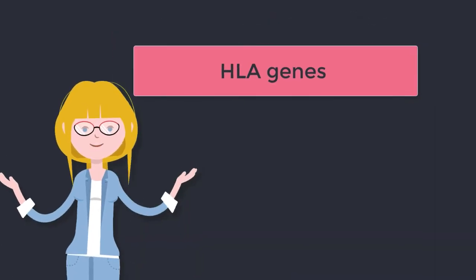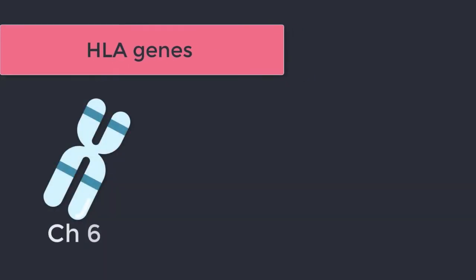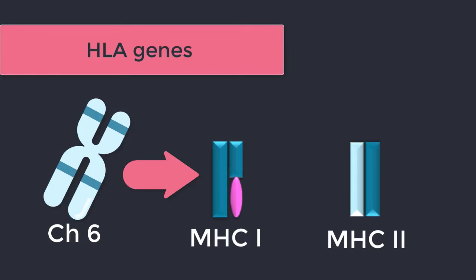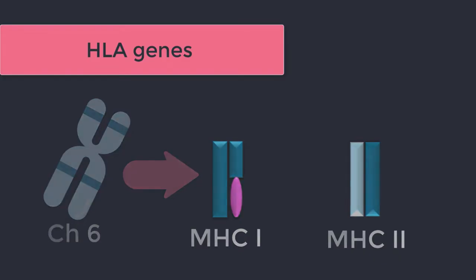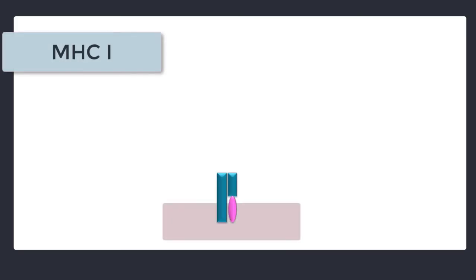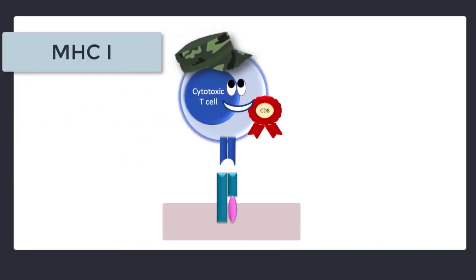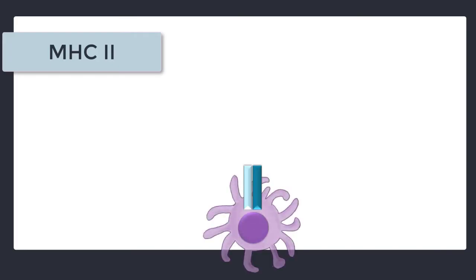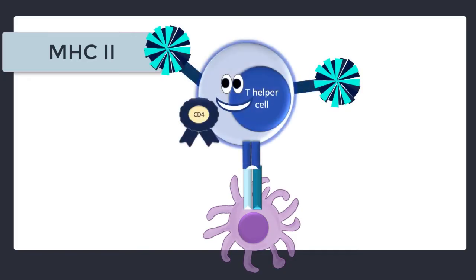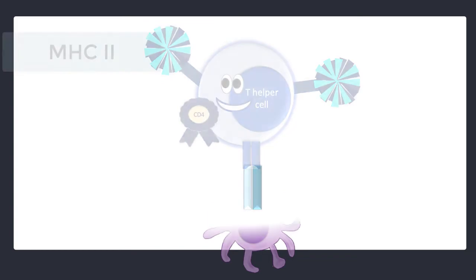The HLA genes are located on chromosome 6 and code for our MHC1 and MHC2 molecules. MHC1 is present on the vast majority of cells in our body and can present antigens to CD8 or cytotoxic T cells. MHC2 molecules on the other hand are located mainly on antigen presenting cells and they present their antigens to CD4 T cells, or T helper cells.